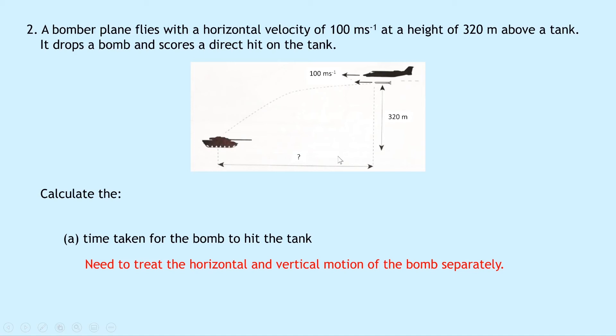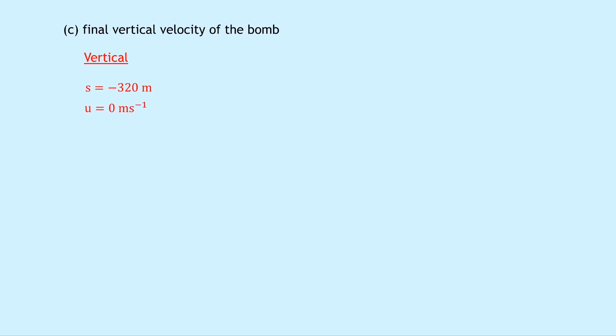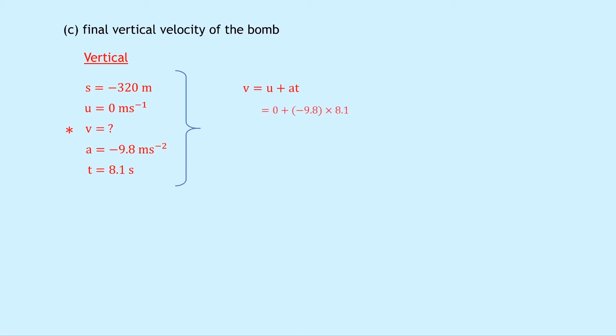Part C asks to calculate the final vertical velocity of the bomb, which occurs when it hits the tank. Considering vertical motion using SUVAT: s equals minus 320 meters, u equals 0 meters per second, v is what we're finding, a equals minus 9.8 meters per second squared, t equals 8.1 seconds. Using v equals u plus at: v equals 0 plus minus 9.8 times 8.1, giving minus 79.4 meters per second. The negative sign indicates the bomb is traveling downwards, consistent with our sign convention.